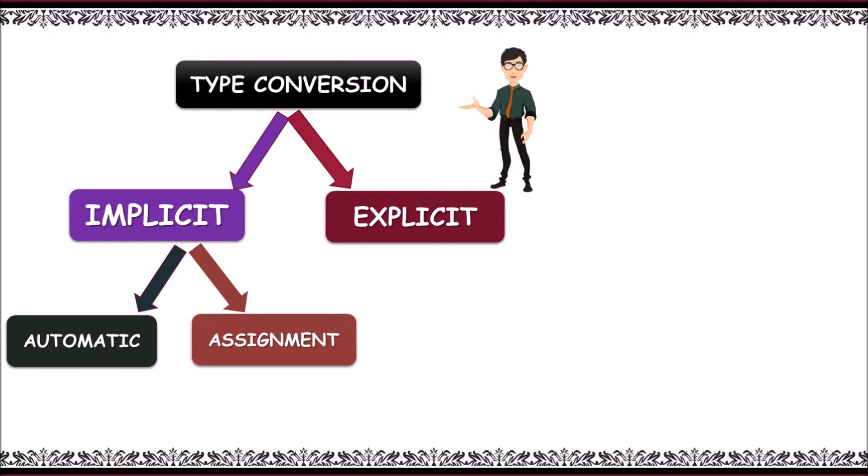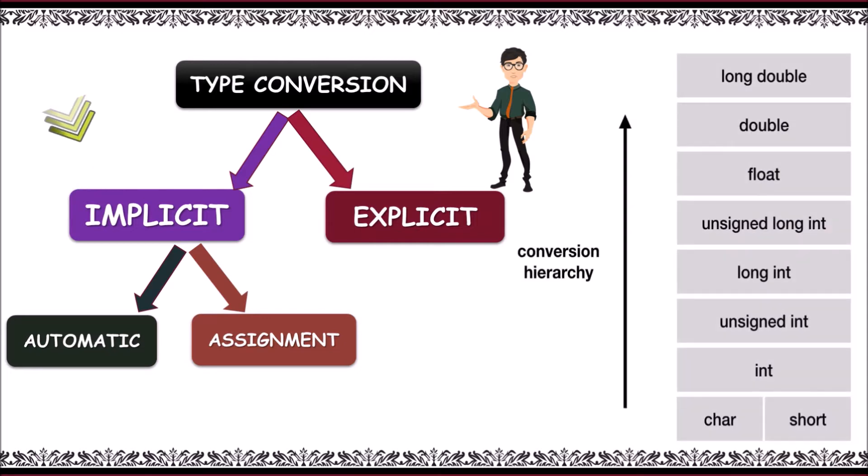Now, let's start with implicit type conversion. Here, we do not require any keyword or special statement in implicit typecasting. In this diagram, you can observe the hierarchy of operators. This is followed in implementation. That is, low-level data type to high-level data type.